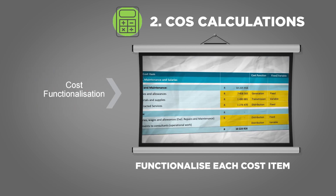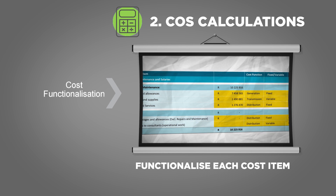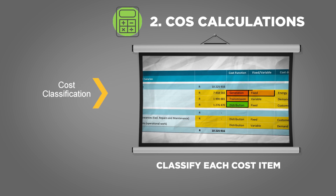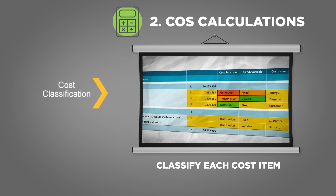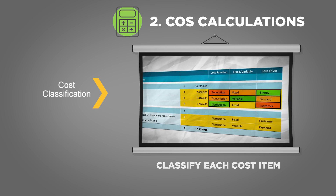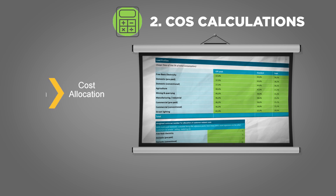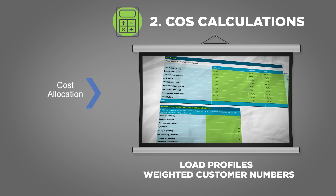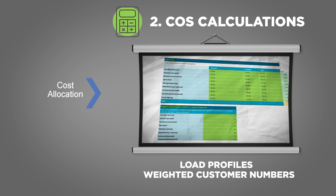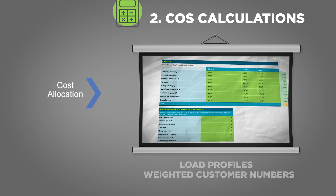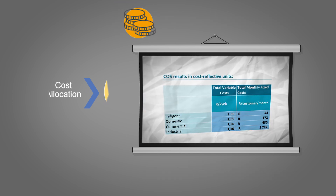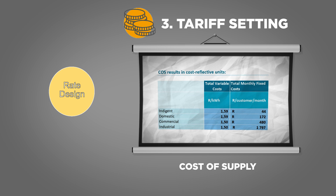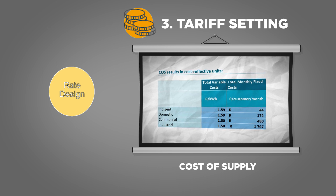Next is to functionalize each D-Form cost item as generation, transmission or distribution. Then they are classified as fixed or variable and according to their cost driver: energy, demand or customer. The cost groups are then allocated using the advanced data inputs, including load profiles and weighted customer numbers. Proxy data is provided in the tool and this can be improved if you have better data available. Now you will arrive at your cost of supplying each customer group with electricity. This is a key input into your tariff design, which is the final step of the cost of supply process.